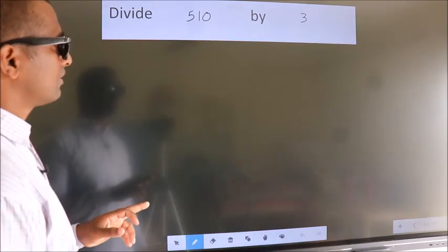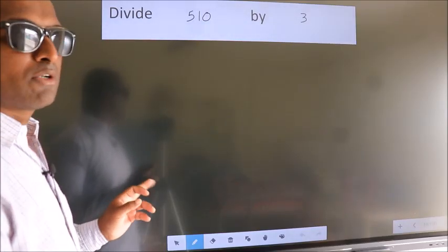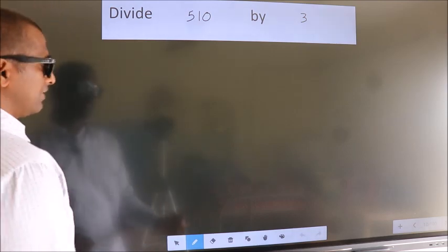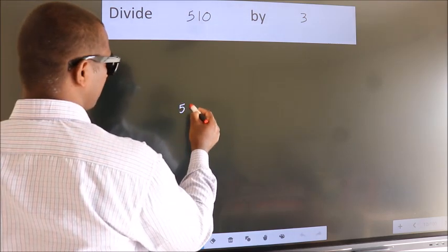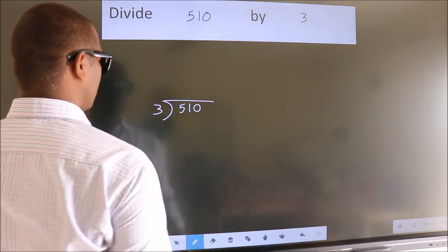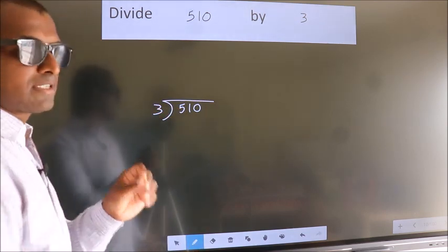Divide 510 by 3. To do this division, we should frame it in this way. 510 here, 3 here. This is your step 1.